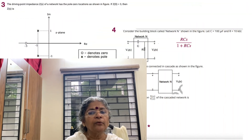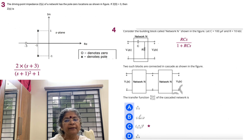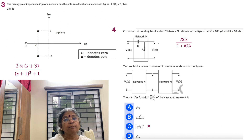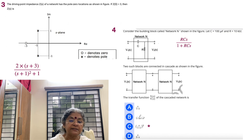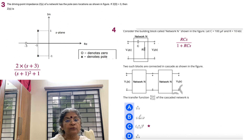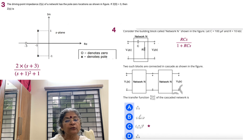Moving on to the third problem. It shows a pole-zero diagram with a real axis and imaginary axis in the s-plane. The zero is at minus 3, and there is a conjugate pole pair at minus 1 plus j1 and minus 1 minus j1. The driving point impedance Z(s) of the network has these pole-zero locations, and additionally Z(0) = 3.